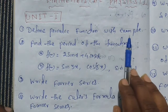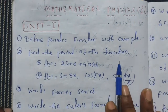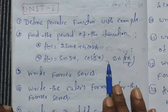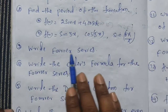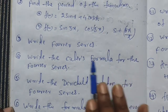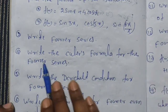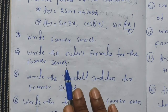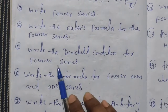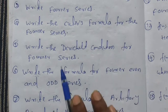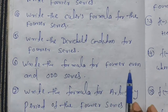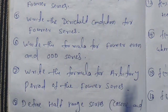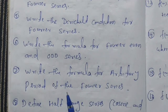Define Periodic Function with Example. Find the Period of the Function. Write the Fourier Series. Write the Euler Formula of Fourier Series. Write the Dirichlet Condition of Fourier Series. Write the Formula for Fourier Even and Odd Series. Write the Formula for Arbitrary Period of Fourier Series.